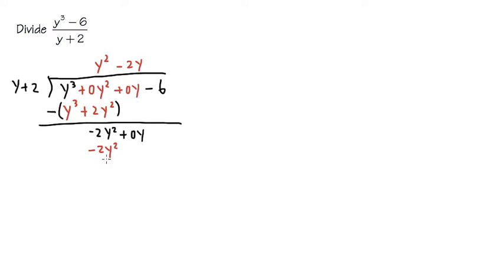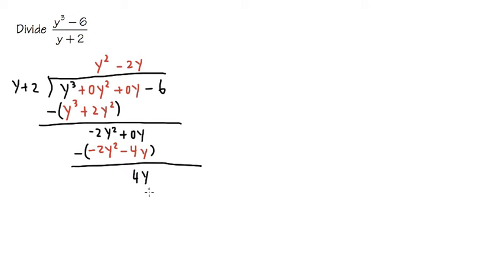Negative 2y times y gives us negative 2y squared — that matches, which is correct. Then we take negative 2y and multiply with positive 2: negative 2 times positive 2 is negative 4, and y times 1 is y, so we get minus 4y. We put subtraction and parentheses again. Negative 2y squared minus negative 2y squared cancels out. Then 0 minus negative 4 becomes 0 plus 4, so we have positive 4y. Do this carefully: 0 minus negative 4 equals positive 4y. We bring down the minus 6. Now what times y gives us 4y? We need positive 4.